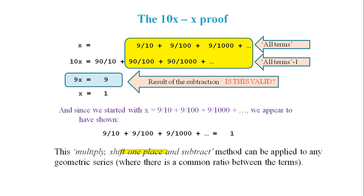What we have here is a multiply, shift and subtract method. It applies to structures called geometric series. And 0.9 recurring is one of these geometric series, which means there's a common ratio between the terms.